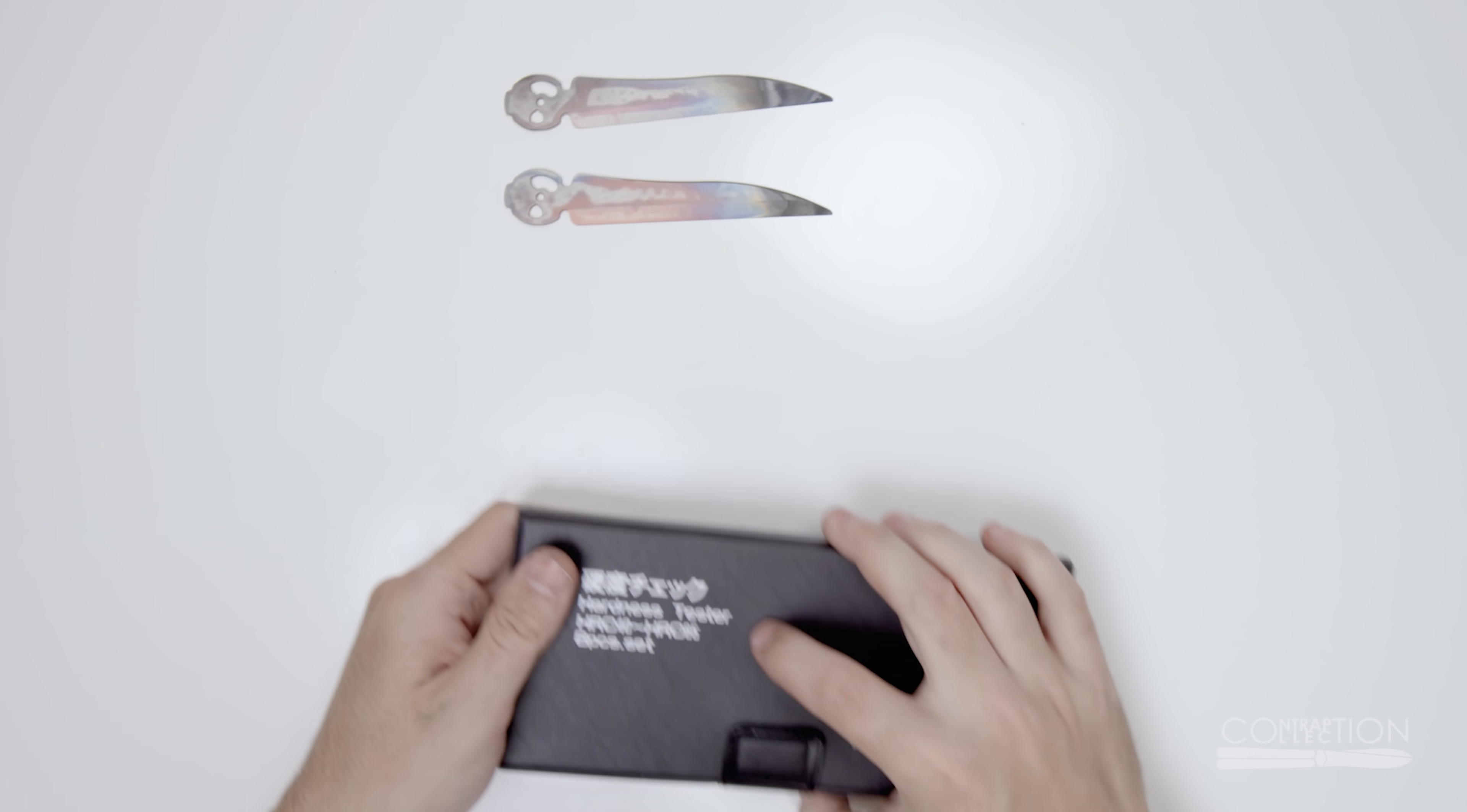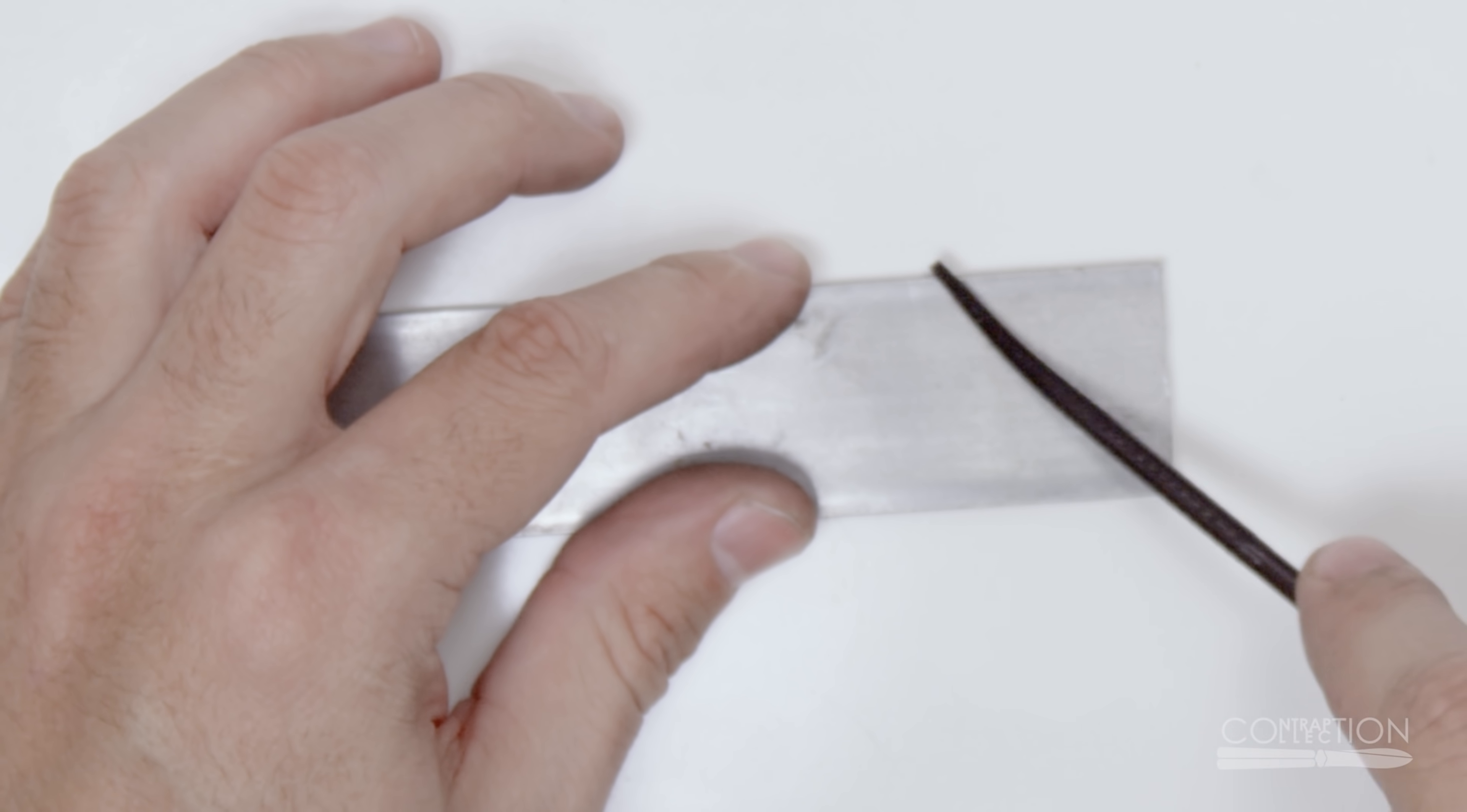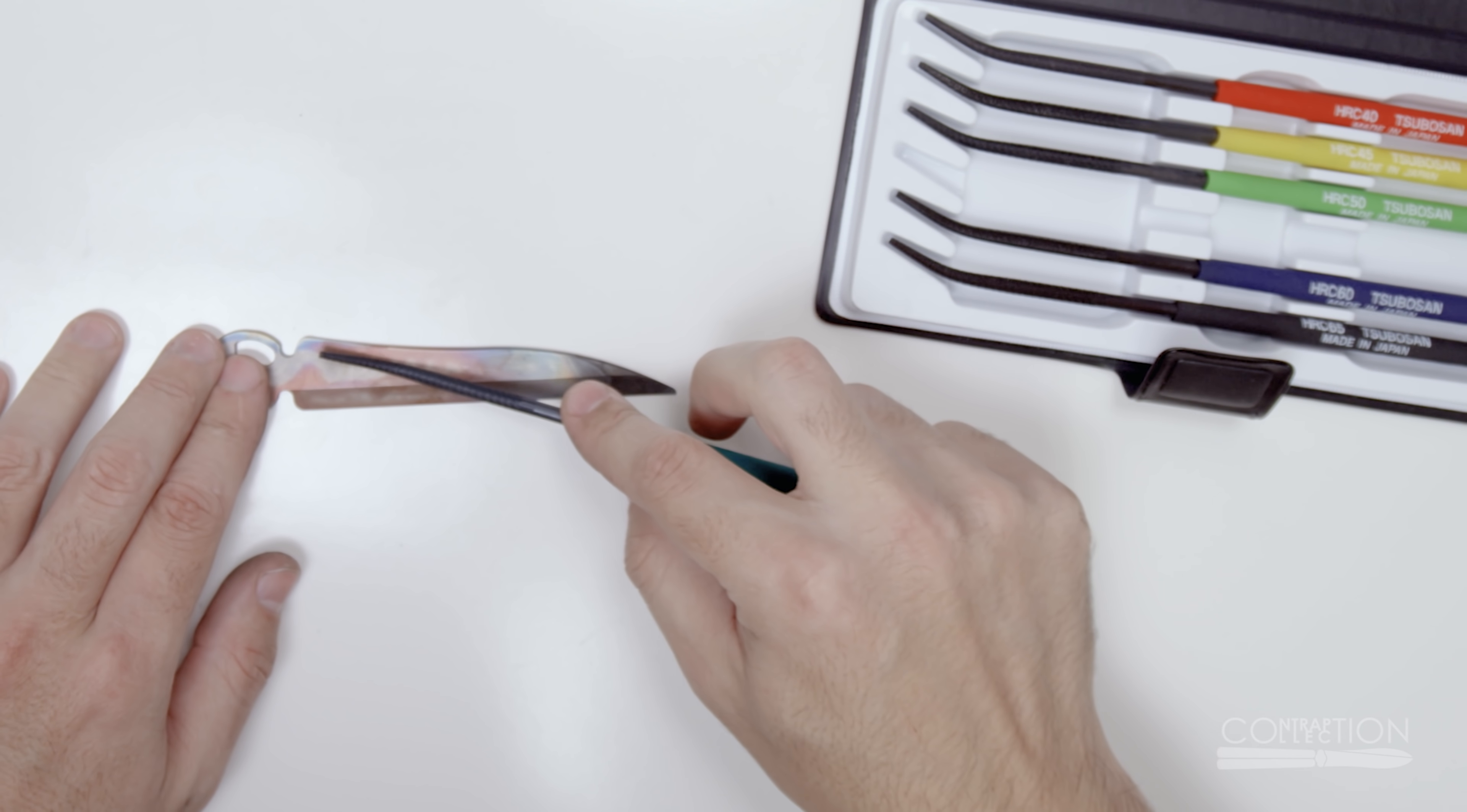I don't have a hardness tester. But I do have these files. Each file is a different hardness. They're all harder than this piece of mild steel. We know this because they all scratch the steel. But depending on how hard my blades are, some of them won't be able to leave a scratch.